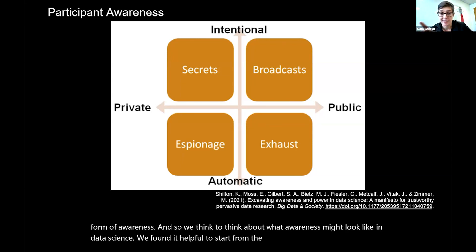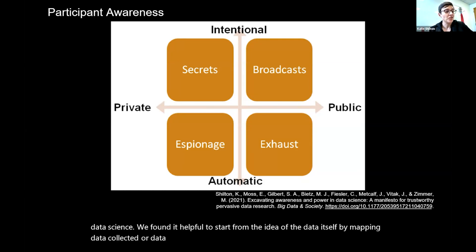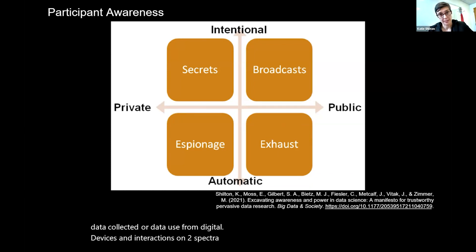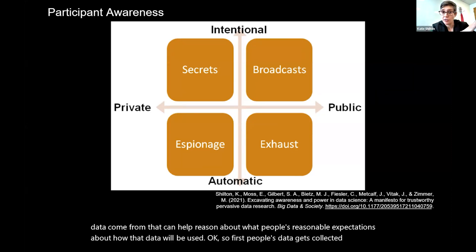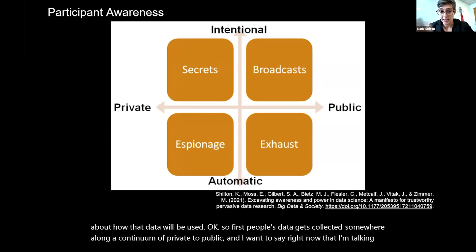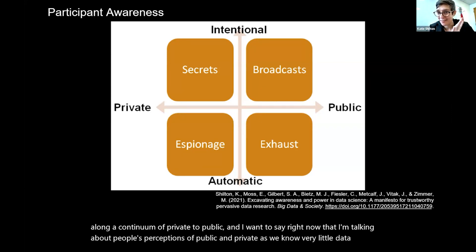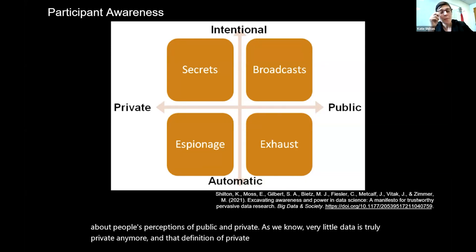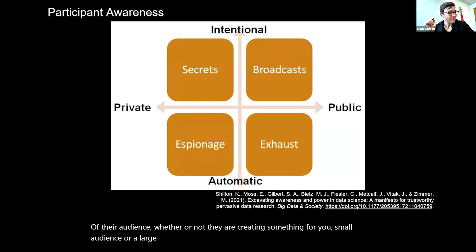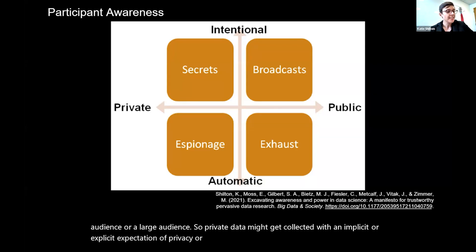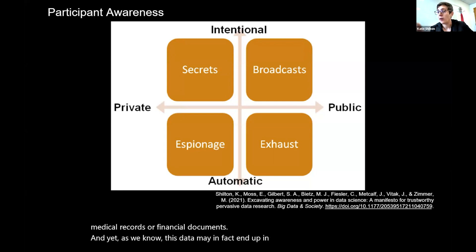To think about what awareness might look like in data science, we found it helpful to map data collected from digital devices and interactions on two spectra. This is a heuristic for thinking about where data come from that can help reason about people's reasonable expectations about how that data will be used. First, people's data gets collected somewhere along a continuum of private to public — and I'm talking about people's perceptions of public and private, since very little data is truly private anymore. Private data might get collected with an implicit or explicit expectation of privacy or a small audience, especially for things like medical records or financial documents. And yet, this data may end up in data sets for one research purpose or another.